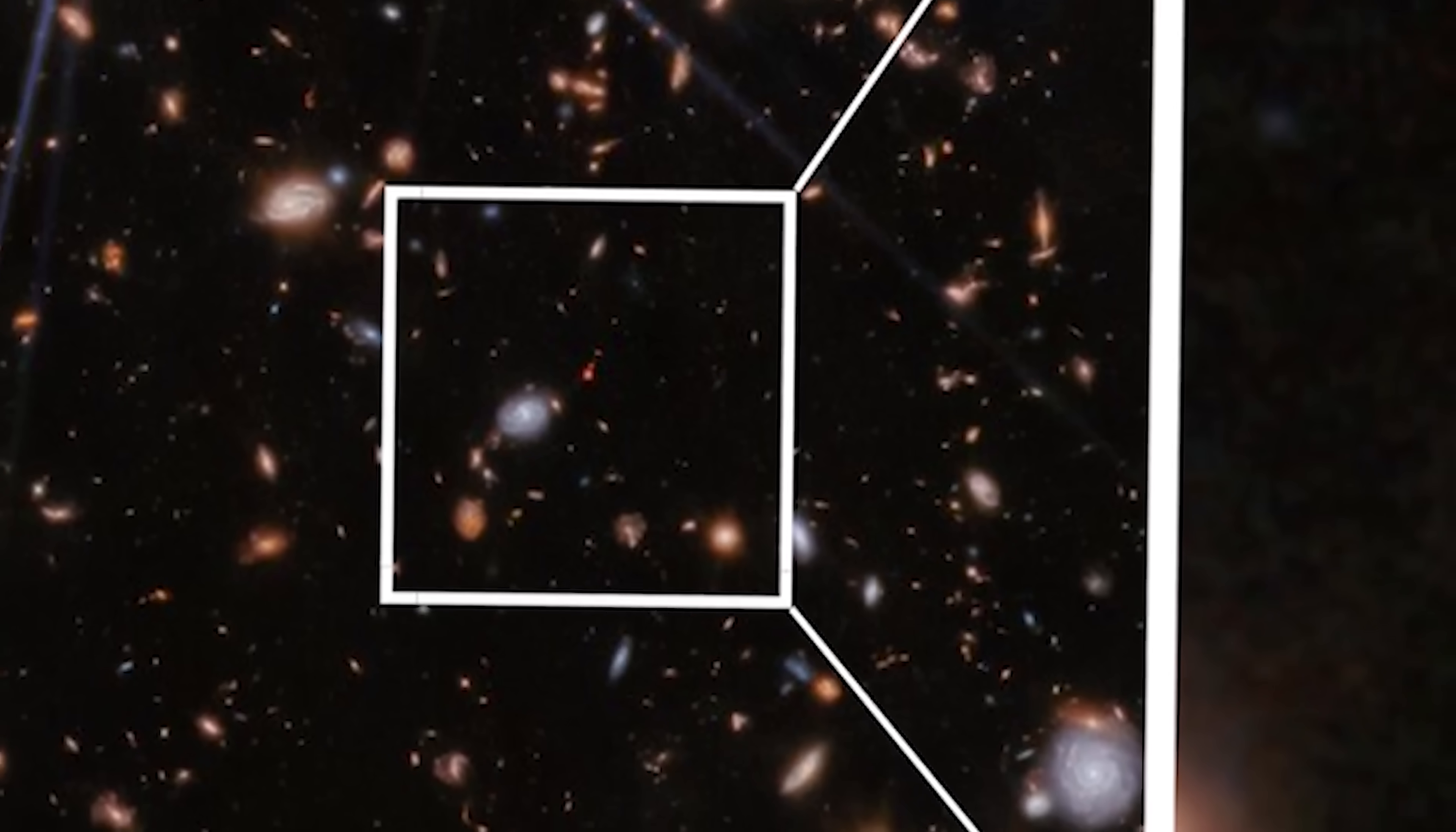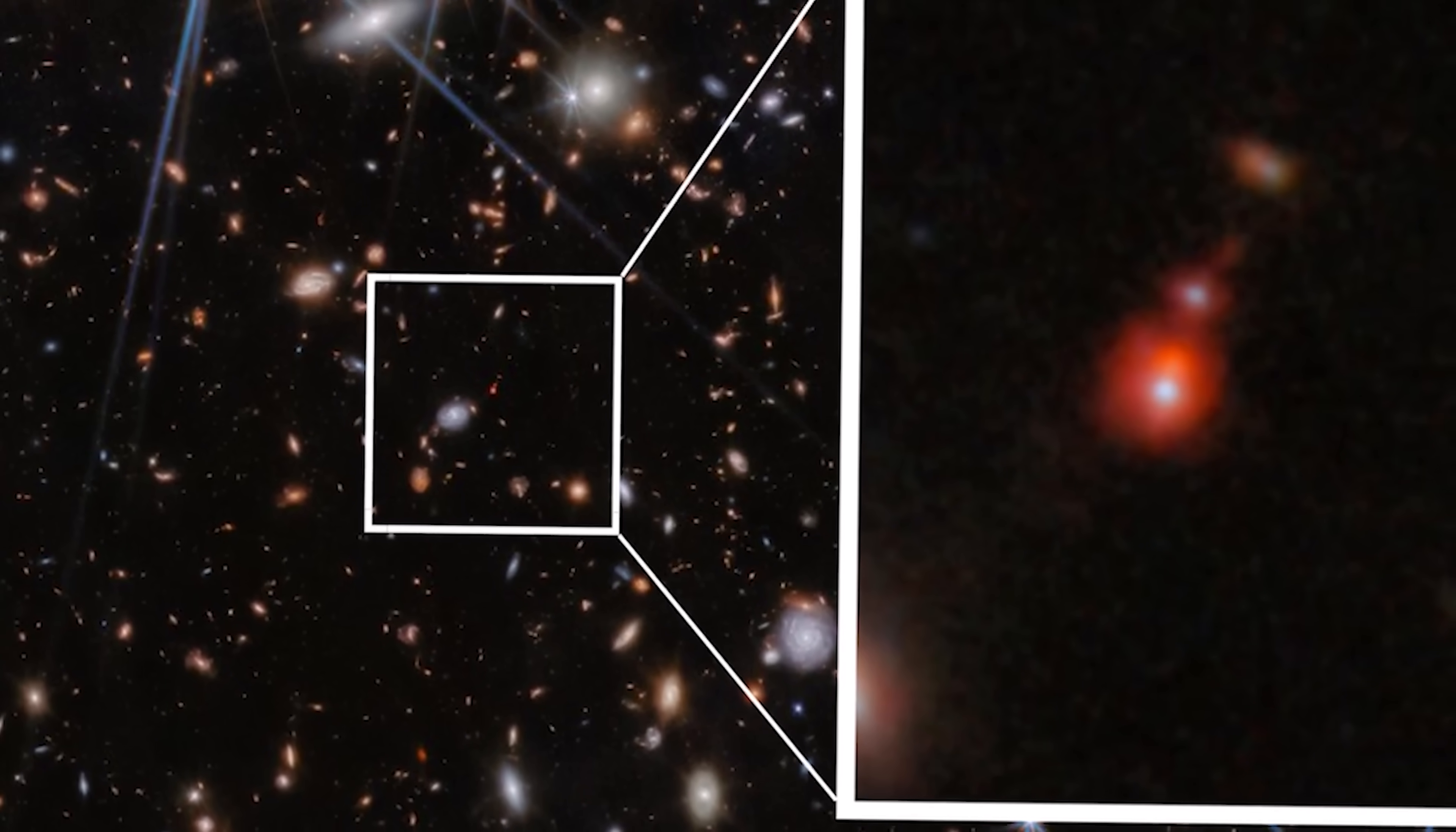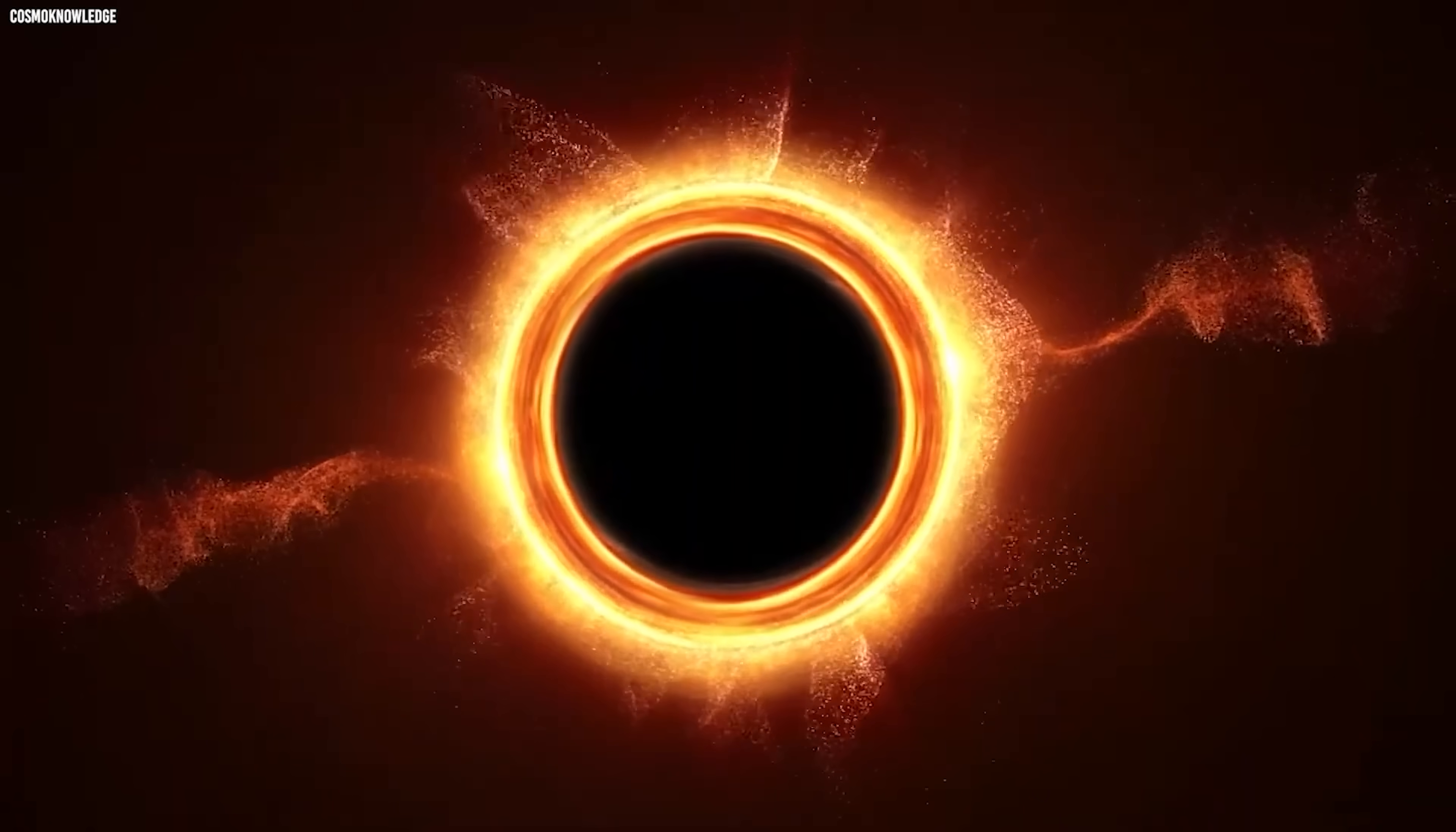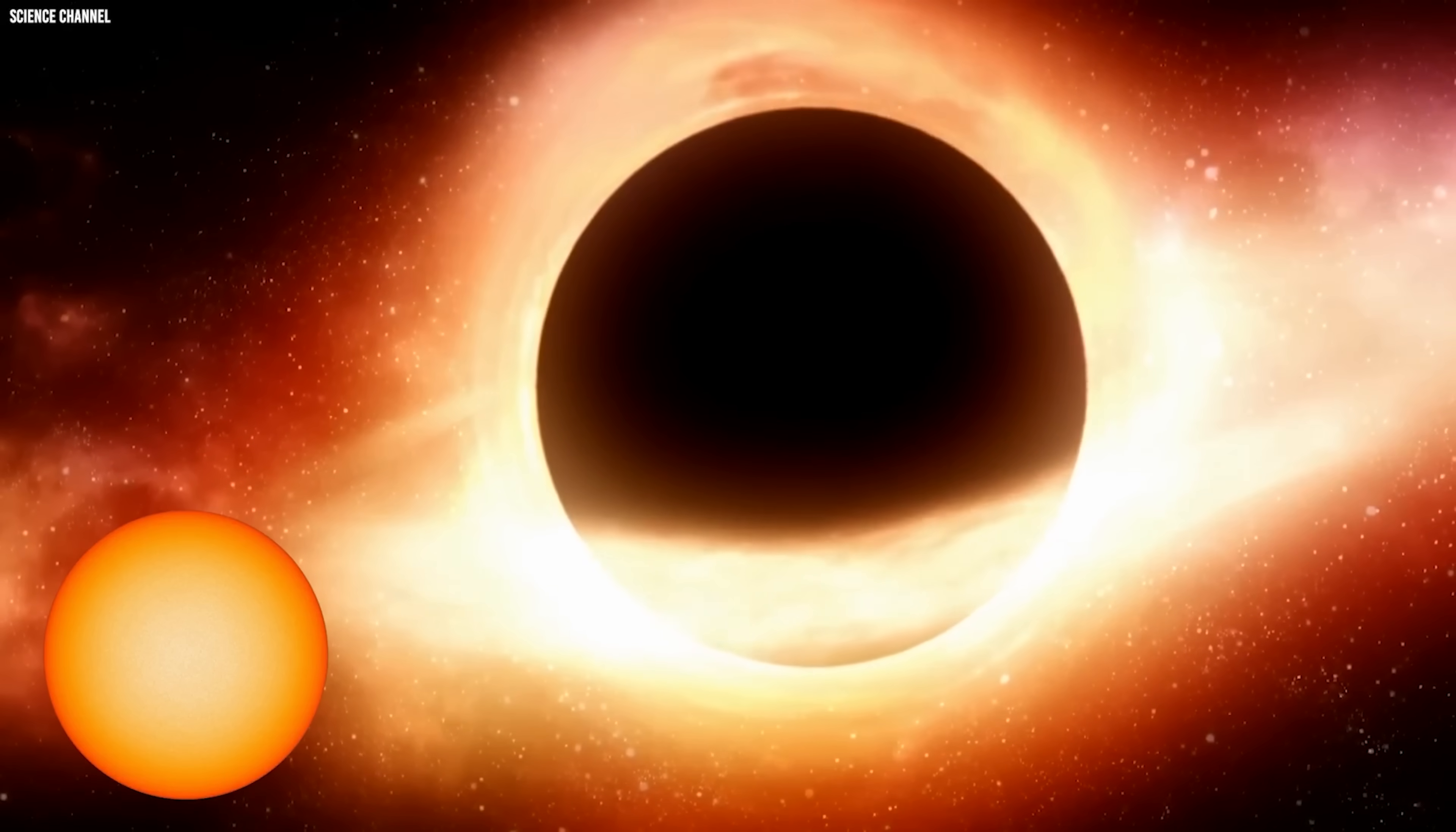And right in the center of the data was the signature no one wanted to see this early in cosmic history. The unmistakable footprint of a supermassive black hole, roughly 400 million times the mass of the sun.